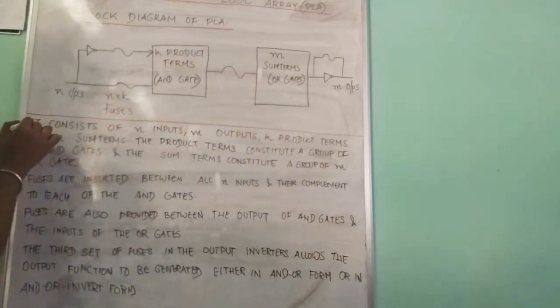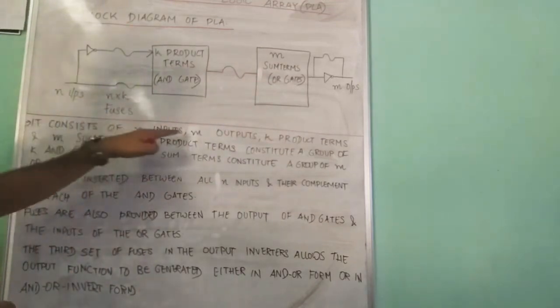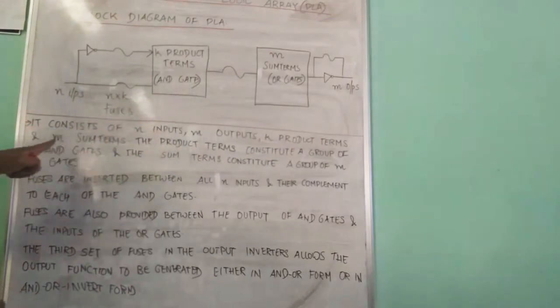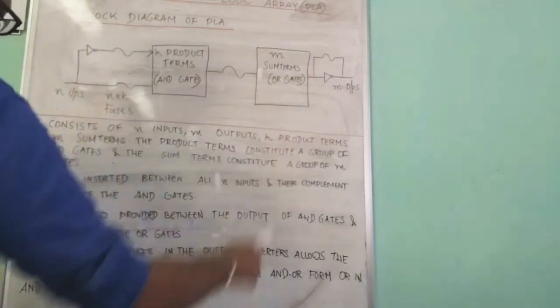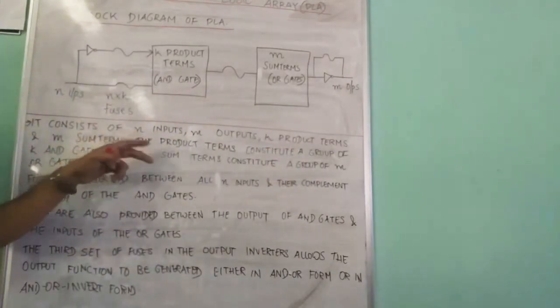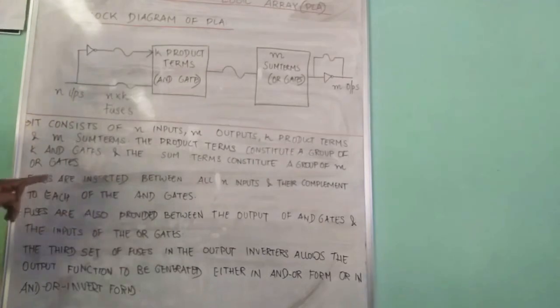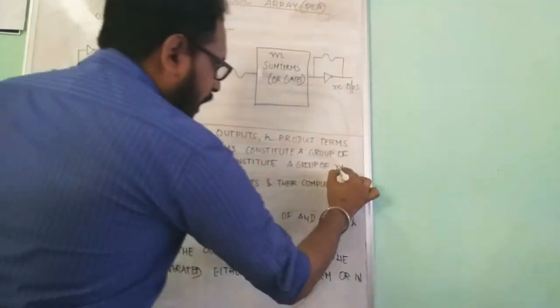First thing, it consists of N inputs, M outputs, K product terms—that is, we have AND gates—and M sum terms, that is OR gates. The product terms constitute a group of K AND gates and the sum terms constitute a group of M OR gates.